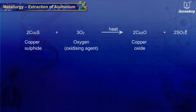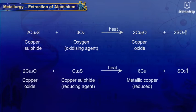For example, copper sulphide is oxidized to copper oxide, which is then reduced by copper sulphide to metallic copper.